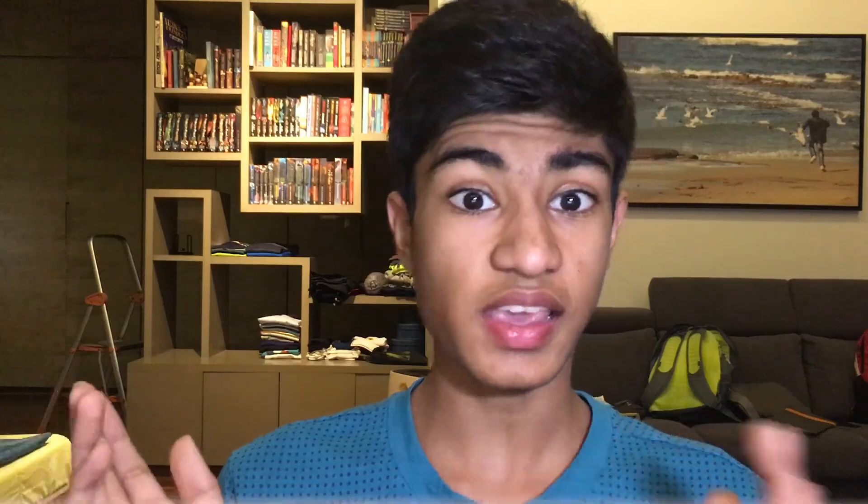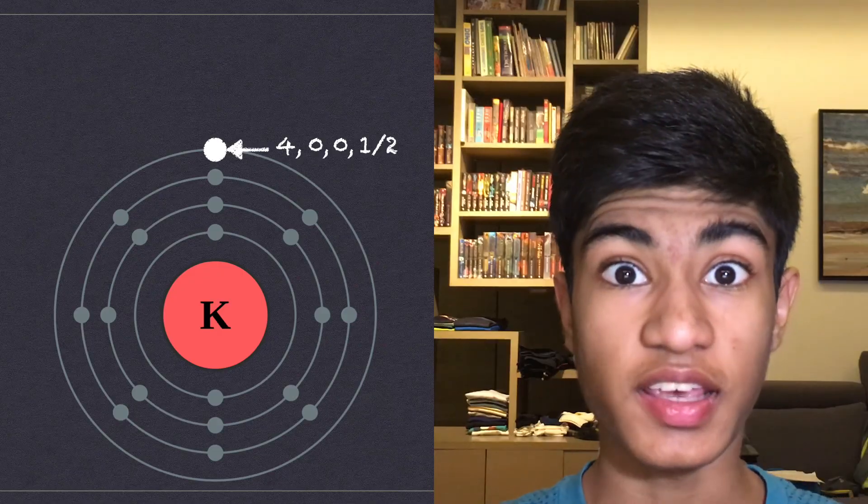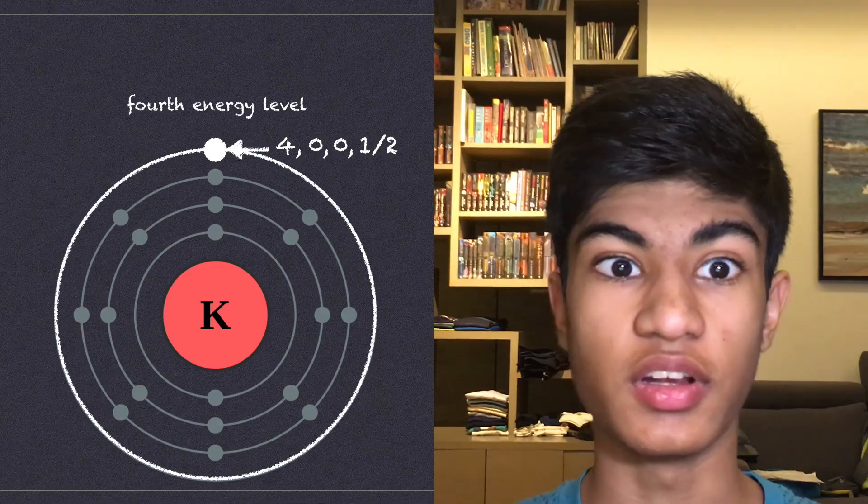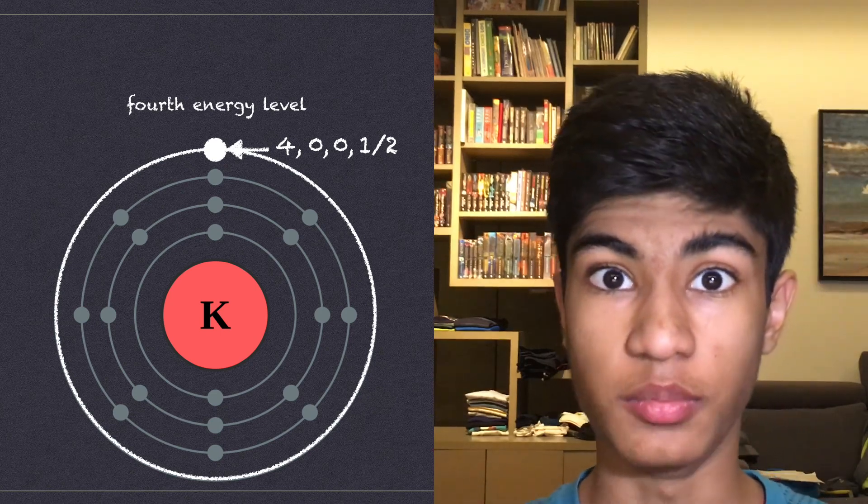The first number is N, the principal quantum number. In this particular case, the electron is in the fourth energy level. So N, the principal quantum number, is four.